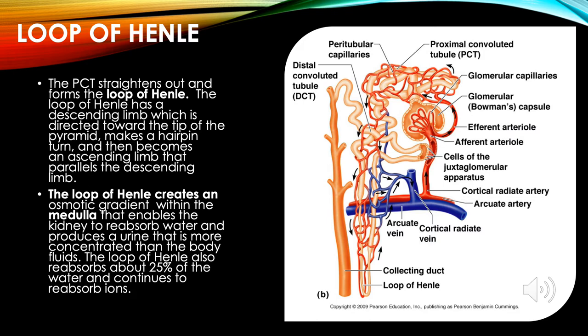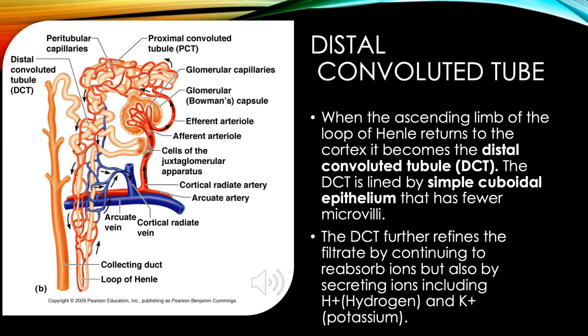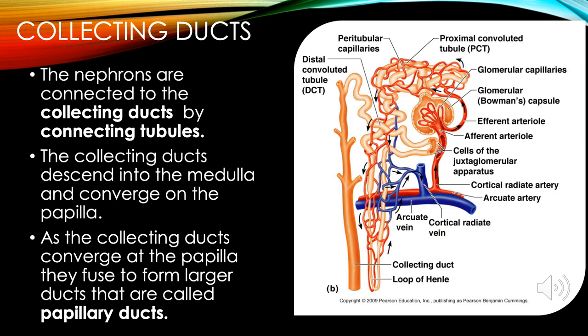The loop of Henle also reabsorbs about 25% of the water and continues to reabsorb ions. When the ascending limb returns to the cortex, it becomes the distal convoluted tubule (DCT). The DCT is lined by simple cuboidal epithelium with fewer microvilli. The DCT further refines the filtrate by continuing to reabsorb ions, and also secretes ions including H⁺ (hydrogen) and K⁺ (potassium).